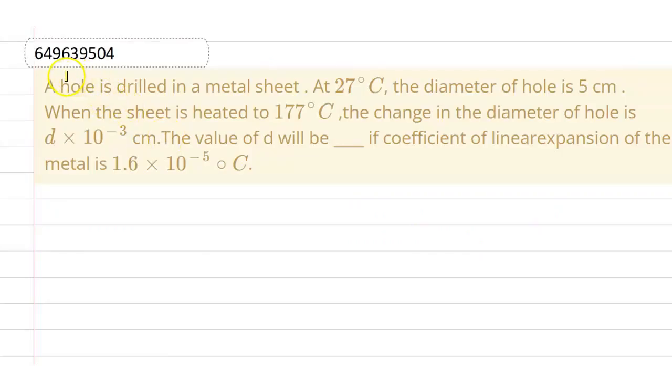Hello everyone! In this question, there is a hole drilled in a metal sheet at 27 degrees Celsius. The diameter of the hole is 5 cm. When the sheet is heated to 177 degrees Celsius, the change in the diameter of the hole is d into 10 raised to the power of minus 3 cm. We have to find out the value of d if coefficient of linear expansion of the metal is 1.6 into 10 raised to the power of minus 5 per degree Celsius.